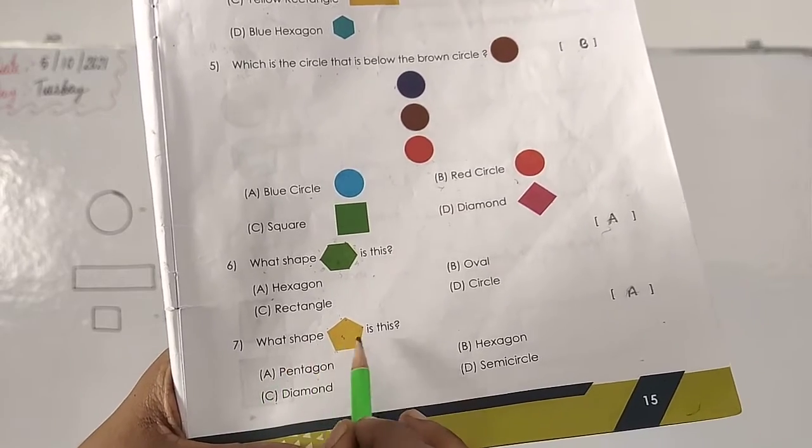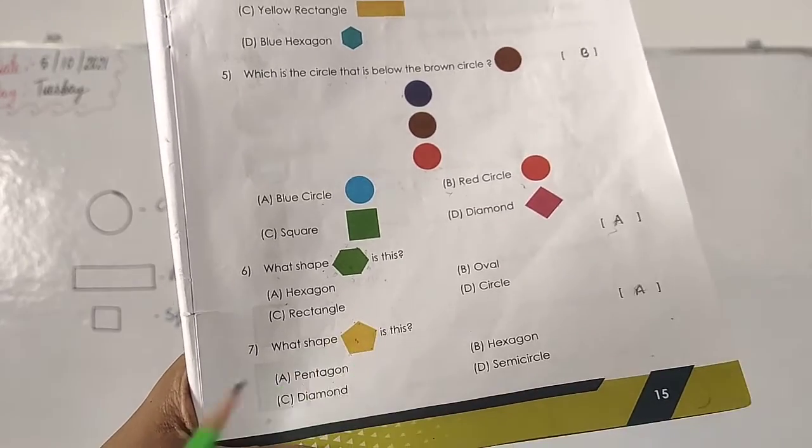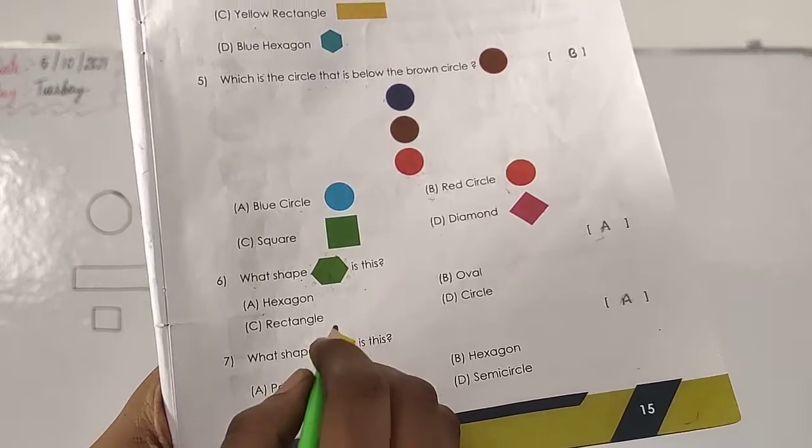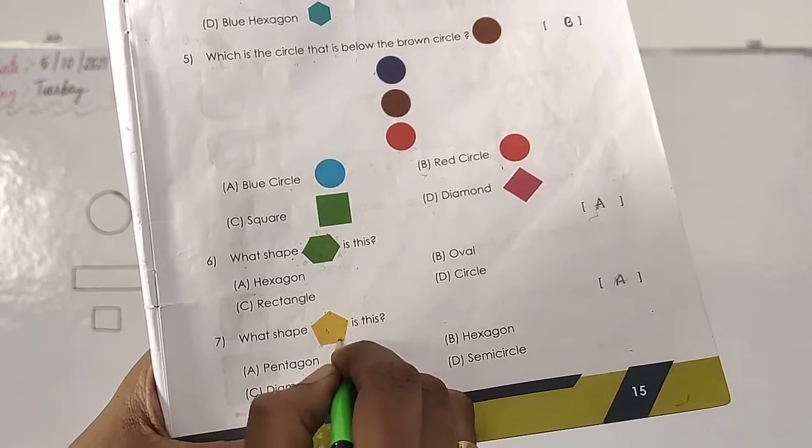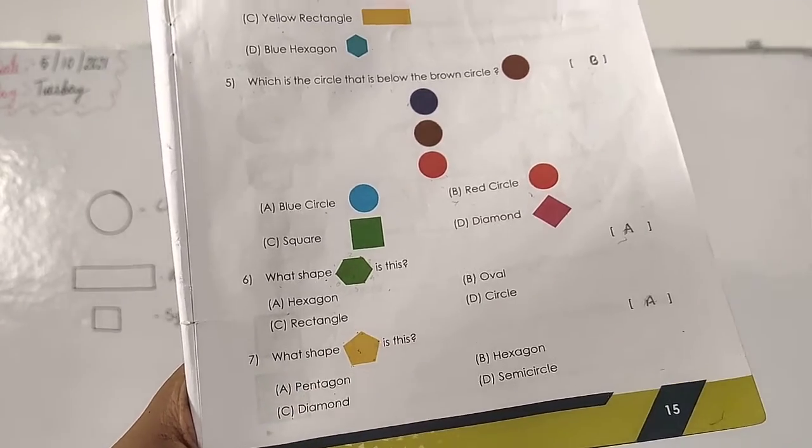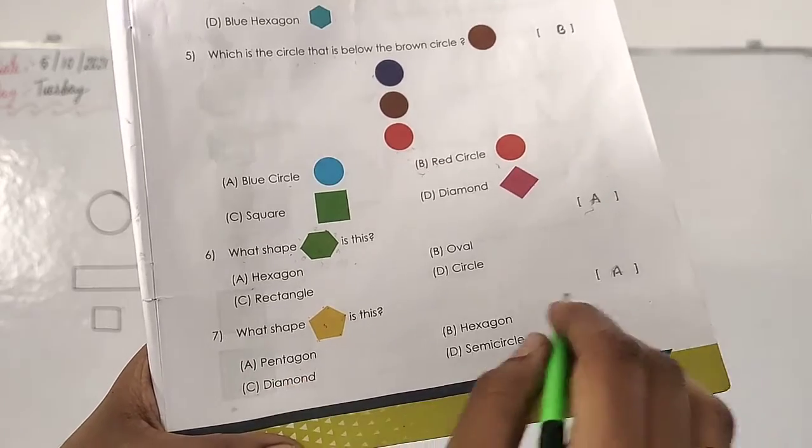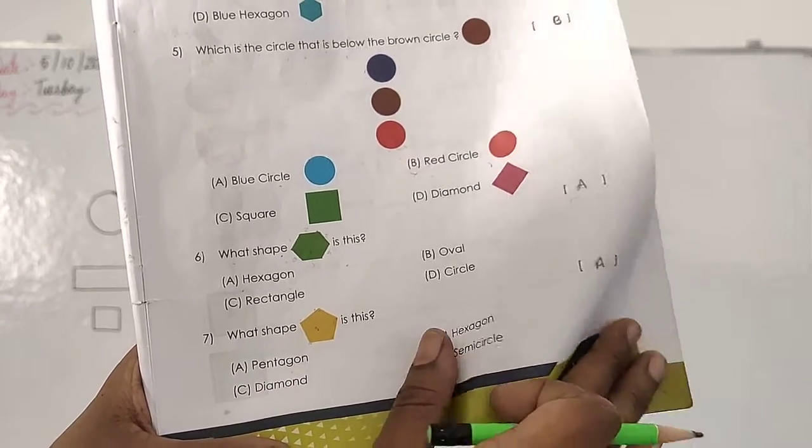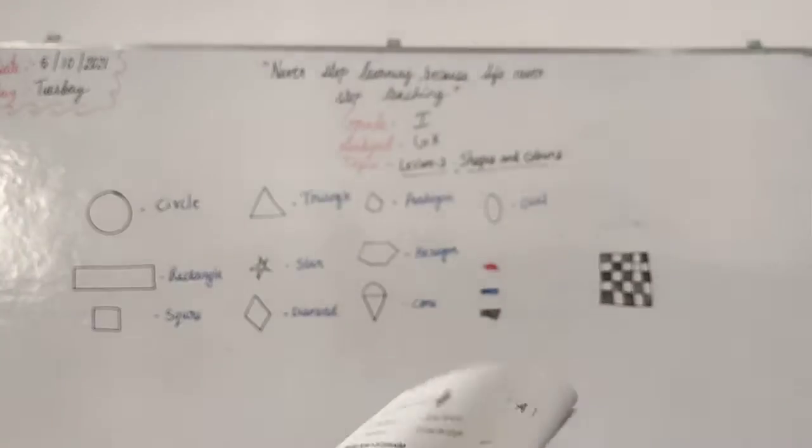The next step. What shape is this? We will count how much side it have. One, two, three, four, five. Five sides. That is pentagon. Yes. Write down A. Complete it. Then turn next page.